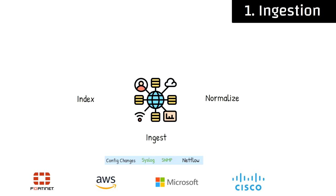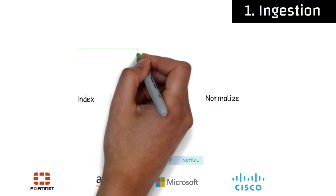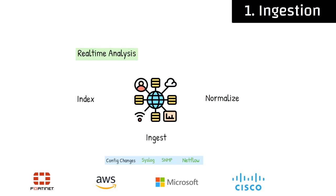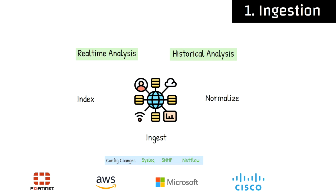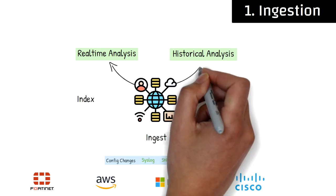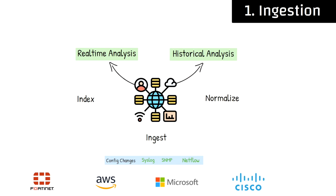A system that supports syslog, SNMP, and netflow is going to have better context than a system that only supports syslog for that device. Gartner also calls out that the ingestion function must allow both real-time and historical analysis of stored data. Both of these functions are critical to other components of an AIOps system.